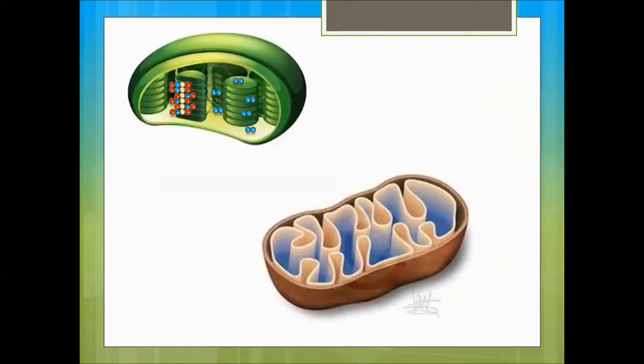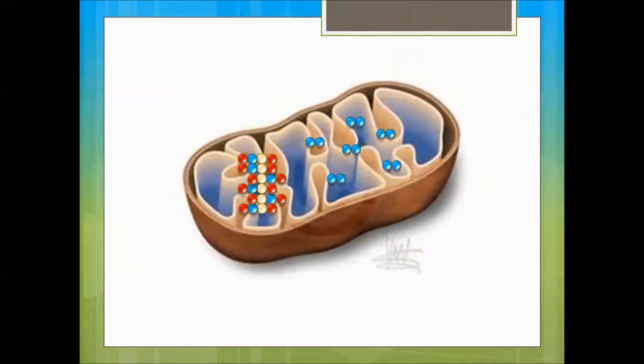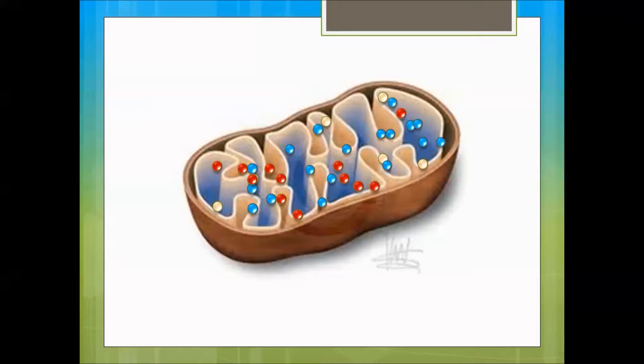From the chloroplasts, these molecules go through the Golgi apparatus and other organelles into the mitochondria. Here, they perform a chemical reaction in which the bondings are removed.